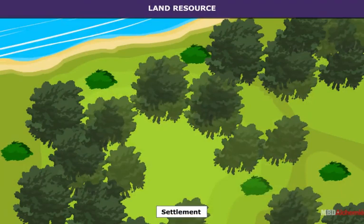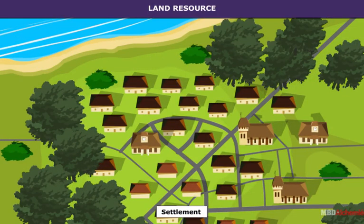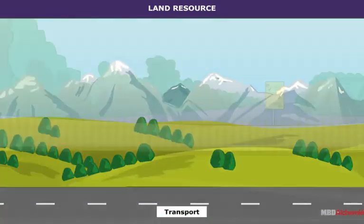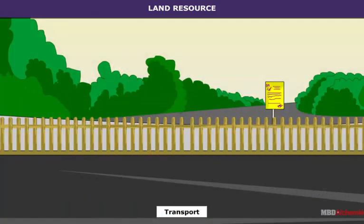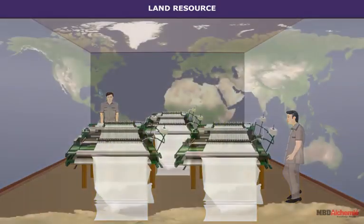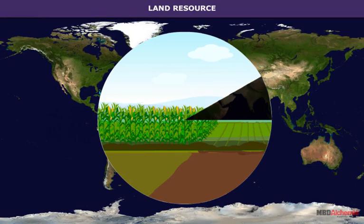Land is the basic resource, used by human beings for settlement, agriculture, transport and for other activities. Most of the clothing requirements of man comes from land, and about 95 percent of human food requirements are met from land.